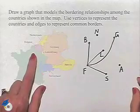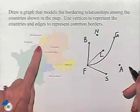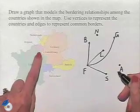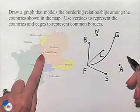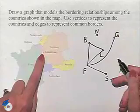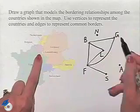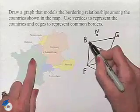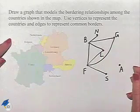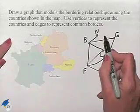Now let's continue around and go next to Belgium. Belgium already has the border with France taken care of. It also borders Luxembourg, Germany, and the Netherlands. Moving on to the Netherlands — we have common borders with Belgium and Germany.